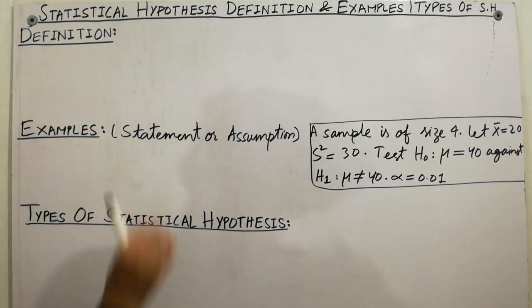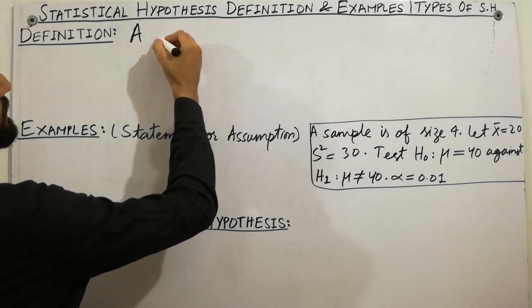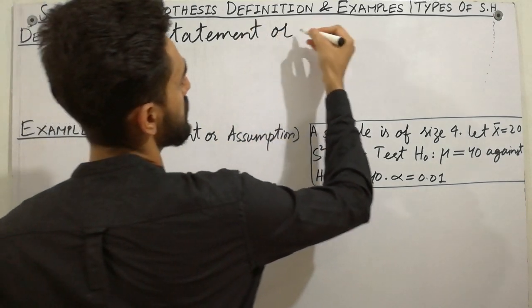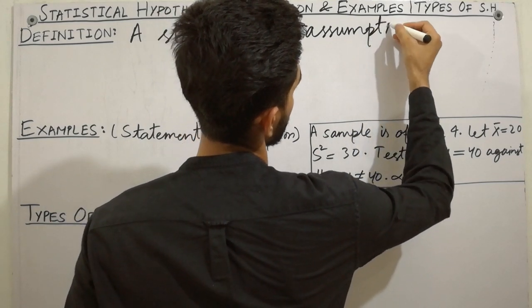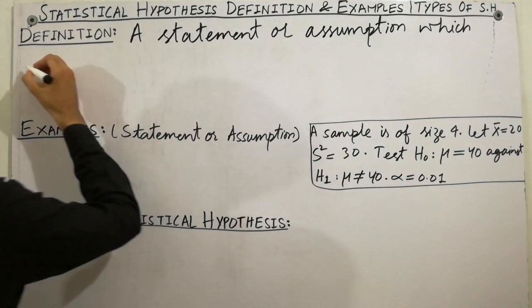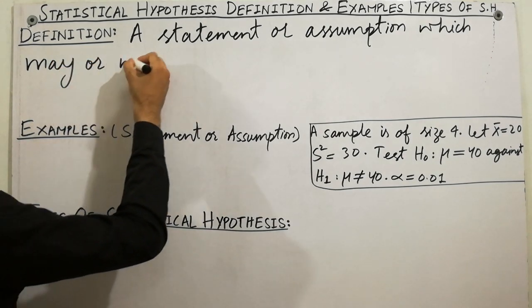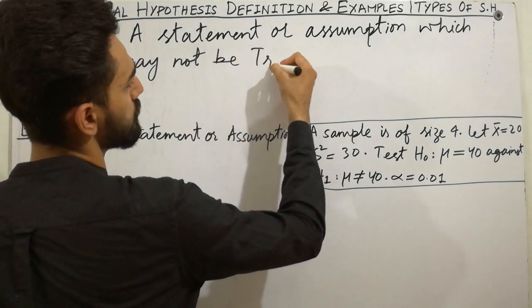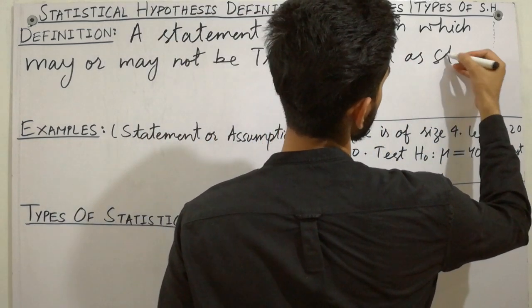A statement or assumption which may or may not be true is called a statistical hypothesis.